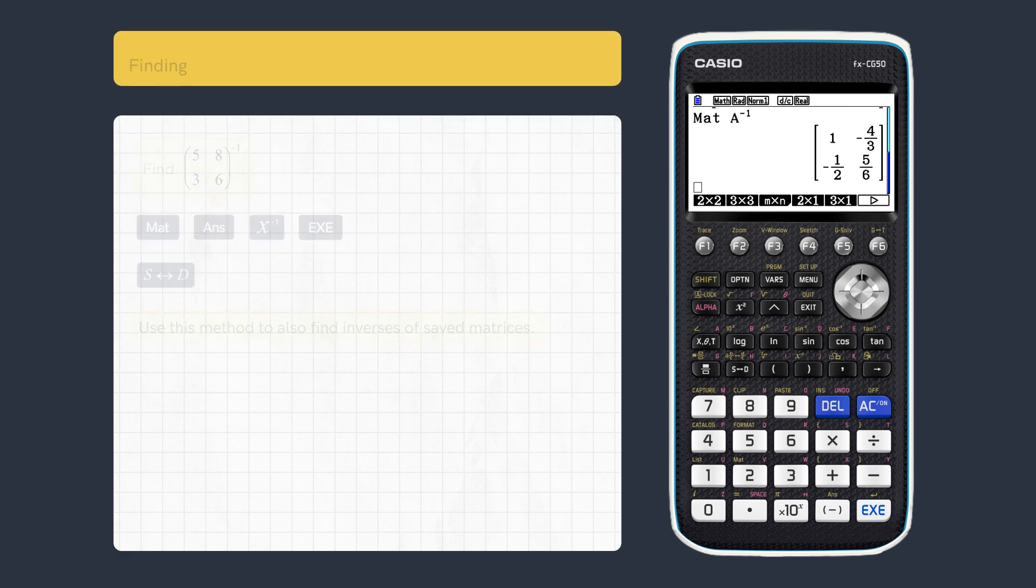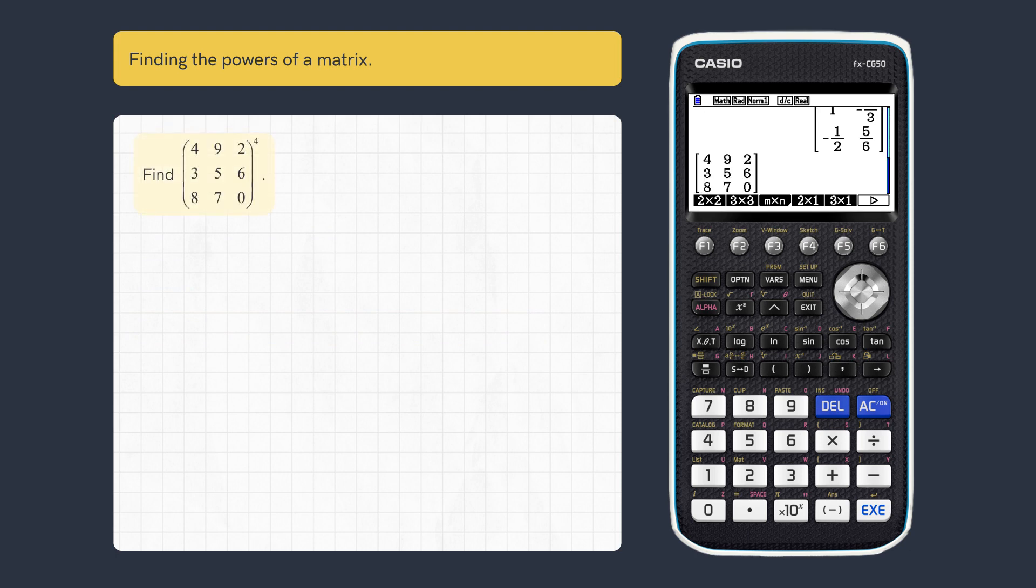We can find the powers of a matrix. Instead of using matrix multiplication, enter this new matrix, then scroll outside the bracket and press caret. Enter the exponent and execute.